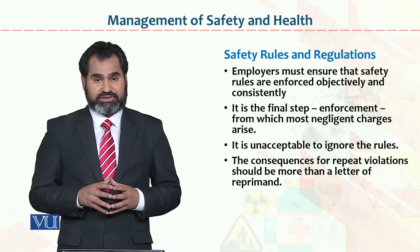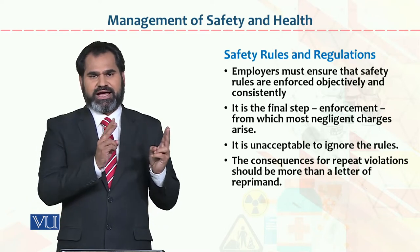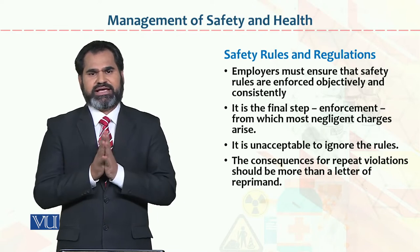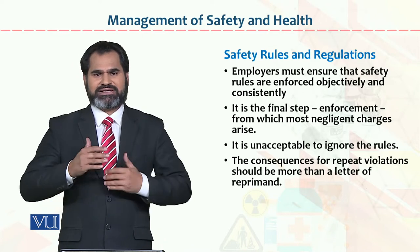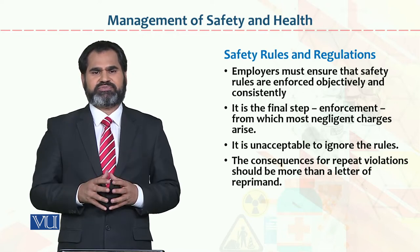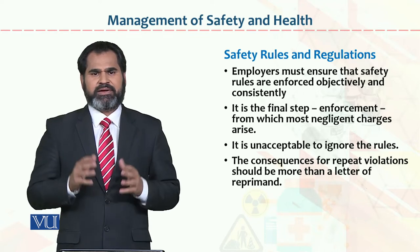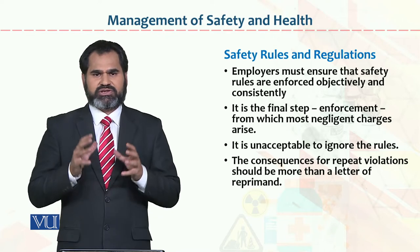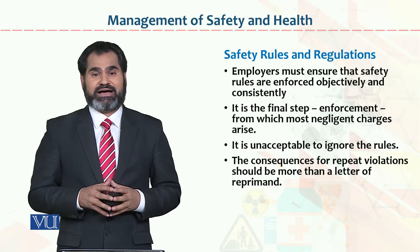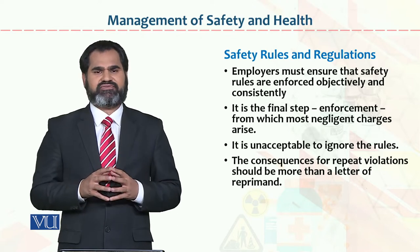Employers must ensure that safety rules are enforced objectively and consistently. Two things are important: employer support and management support. You can only implement rules consistently in a way that enforces rules and regulations. If some employee is behaving unethically, you have to control that particular unethical behavior as defined by court practices, rules, and regulations. Those who need guidance must be trained. This is called safety rules and regulations.